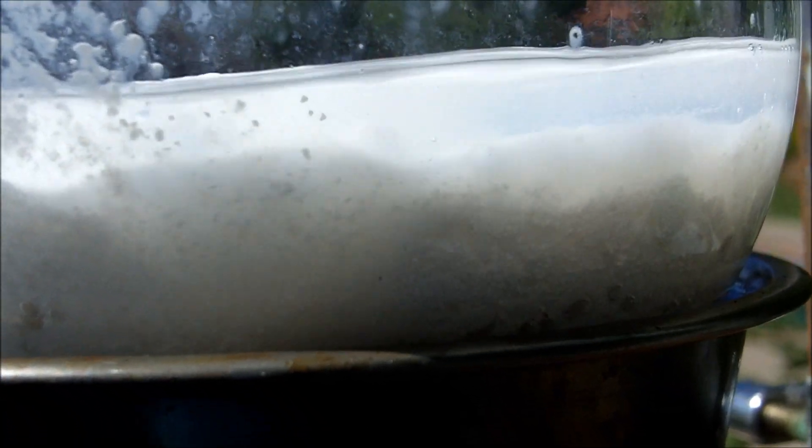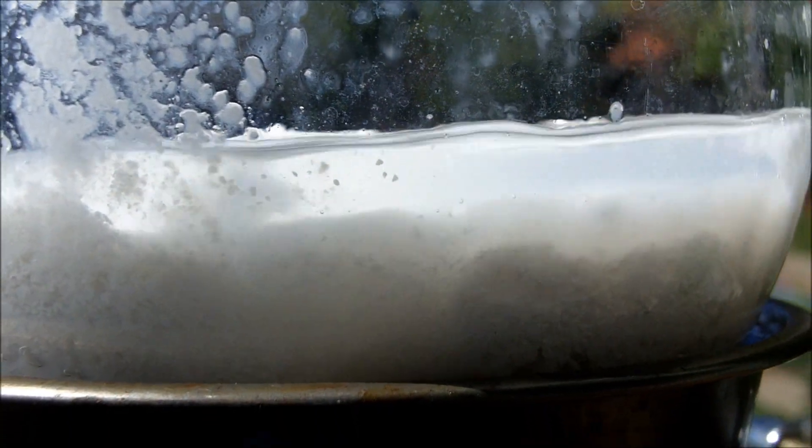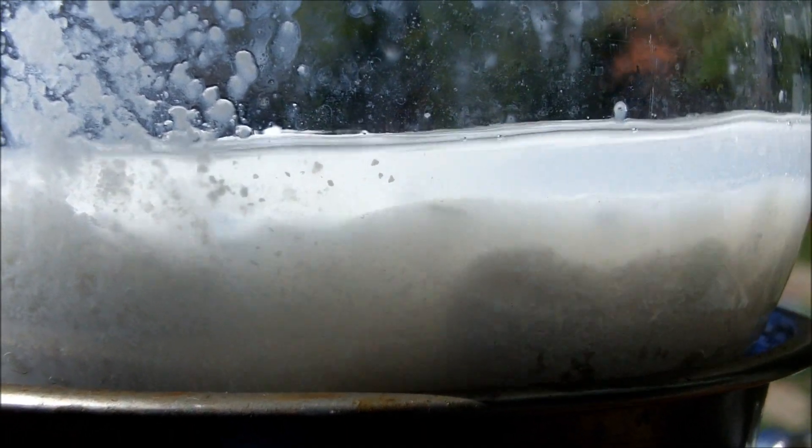After distillation we'll be left with two layers, the bottom layer being chloroform. Even as it's boiling you can see the two layers separate in the round bottom flask. So after that's all distilled over, I'll separate them out.